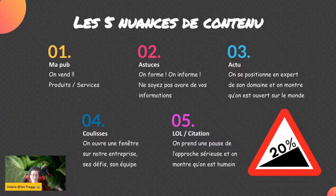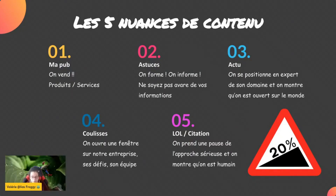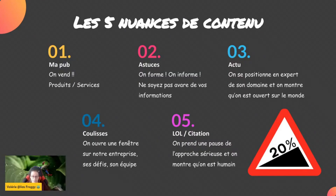La catégorie numéro trois, c'est la catégorie actualité. On se positionne en expert de son domaine en montrant qu'on n'est pas juste le nez viré sur son nombril. On est intéressé par notre domaine, par notre entreprise, on est des passionnés. Mais on peut aussi montrer à notre communauté qu'on est intéressé par ce qui se passe autour, dans le monde — qu'on est au courant qu'il y a une pandémie, qu'on parle de l'actualité de notre domaine, de notre profession, ou de l'actualité du calendrier.